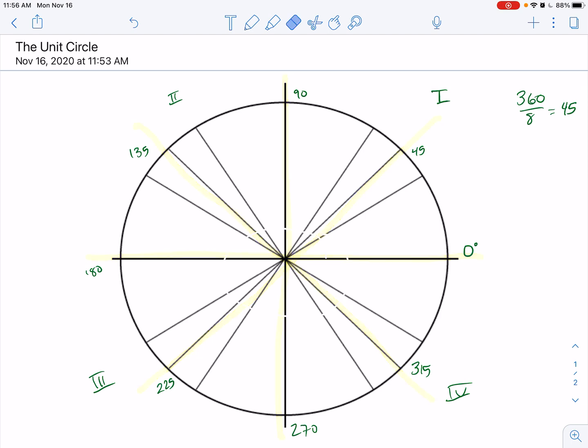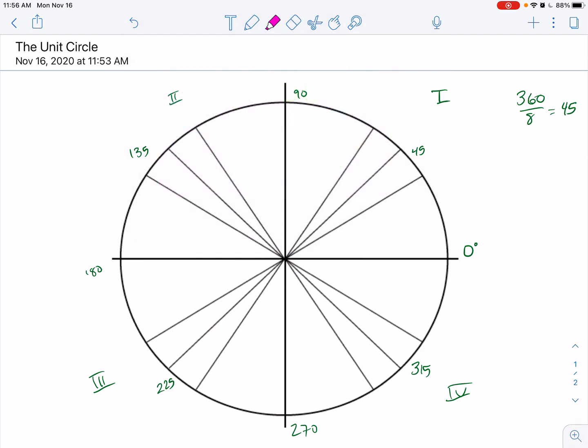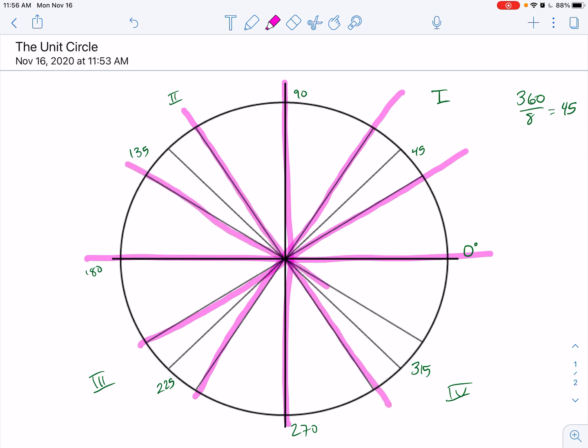And then we also can take our circle and divide it into 12 chunks. I'm avoiding the ones that I just did—that's the 45 family. And now I've divided my whole circle, my 360 degrees, into 12 chunks, which gives me a 30 degree angle each time.